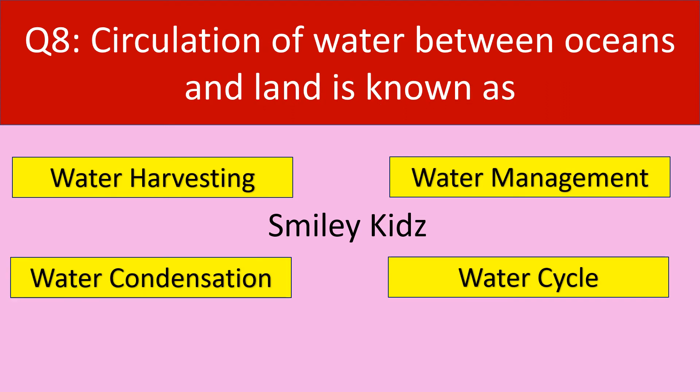Question number 8. Circulation of water between oceans and land is known as — your options are: water harvesting, water management, water condensation, water cycle. Your time starts now.